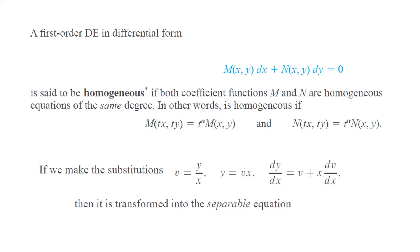Recall that if you have a first-order differential equation and M and N are homogeneous functions of degree alpha, then we can use the substitution v equals y over x or u equals y over x, and transform this differential equation into a separable differential equation.